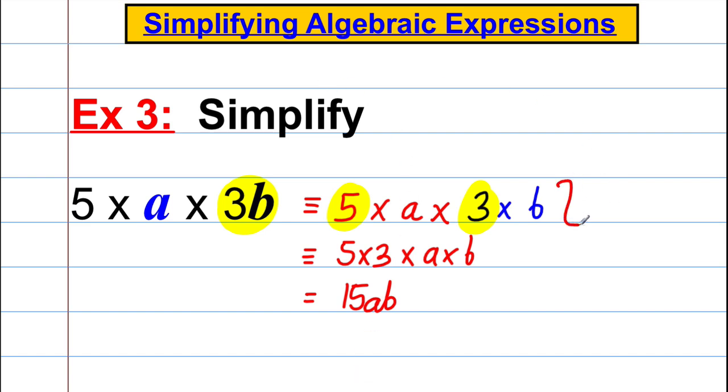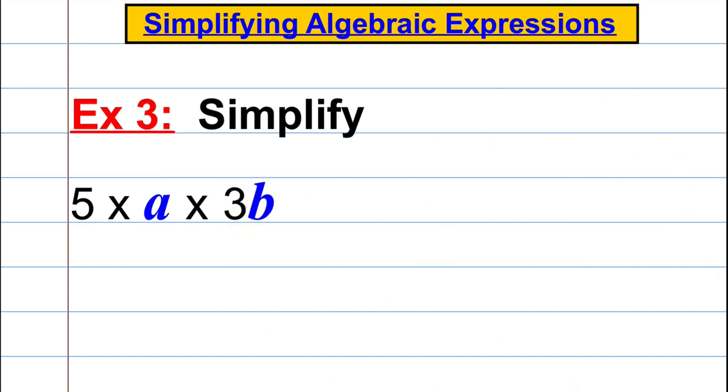Now clearly you do not have to show this working here. This is just for me to explain to you what's going on. What you can simply do when you see something like this, maybe if I rub this out here, what you can simply do in one move is you can just say 5 multiplied by 3 is going to give me the 15 and a multiplied by b is going to give me ab.